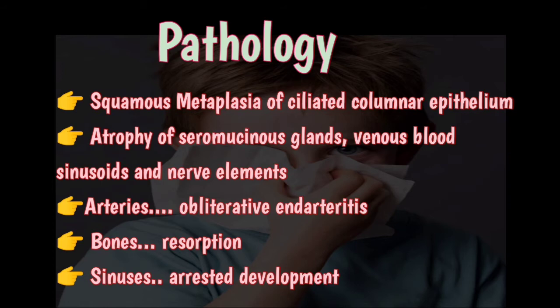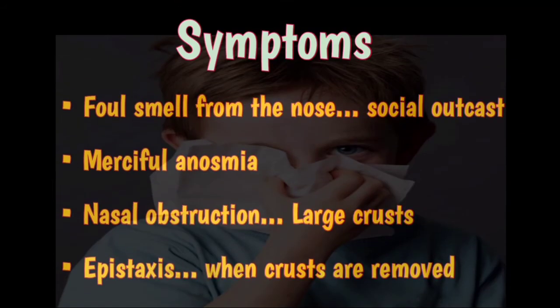There is atrophy of seromucinous glands, venous blood sinusoids, and nerve elements. Arteries undergo obliterative endarteritis, in which there is severe proliferation of the inner lining of an artery that results in occlusion of the arterial lumen. Bones show reabsorption, so there is widening of nasal chambers, and paranasal sinuses are small due to their arrested development.